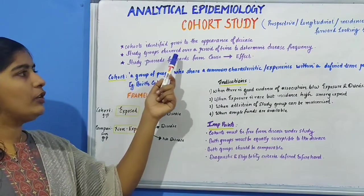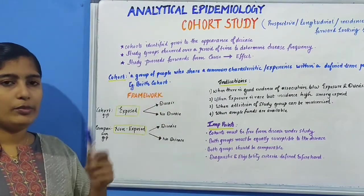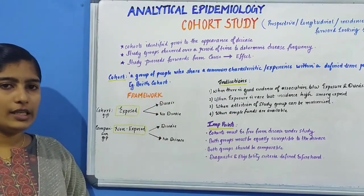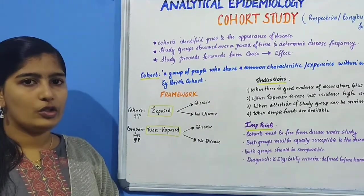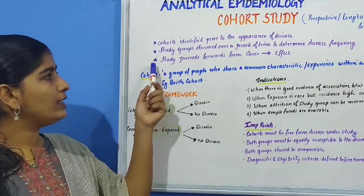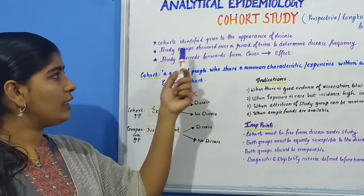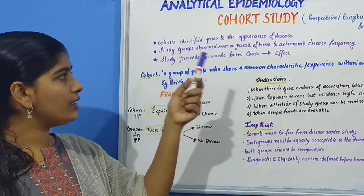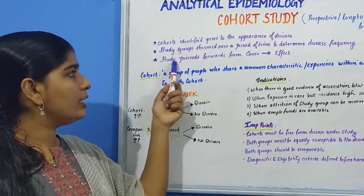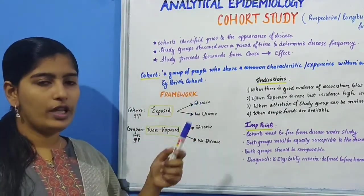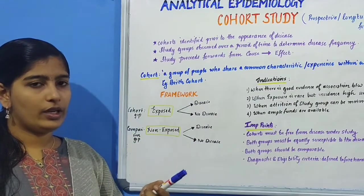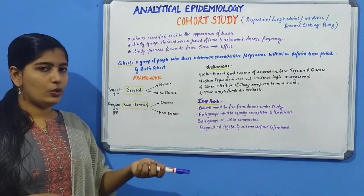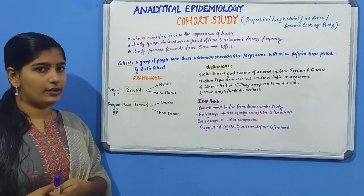The study groups are observed over a period of time to determine the disease frequency. It is a prospective or forward-looking study — that is, the study proceeds forward from cause to effect, from exposure to disease.